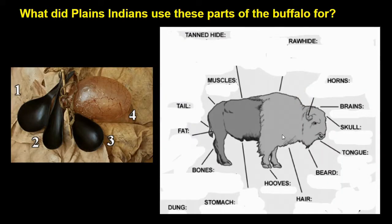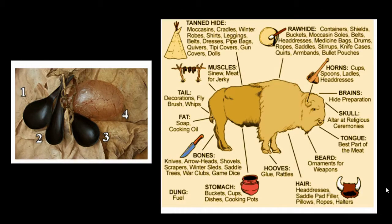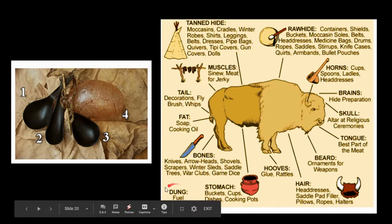Looking at this diagram of a buffalo, try to determine what the Plains Indians used each different part for. As we can see, the Plains Indians used virtually every part of the buffalo — not just for food, but for things like soap, weapons, tools, and glue. They made glue out of the buffalo's hooves, and also used the skulls, the brains, and the stomach. They even used buffalo droppings for fuel, because remember, they did not have a lot of wood.